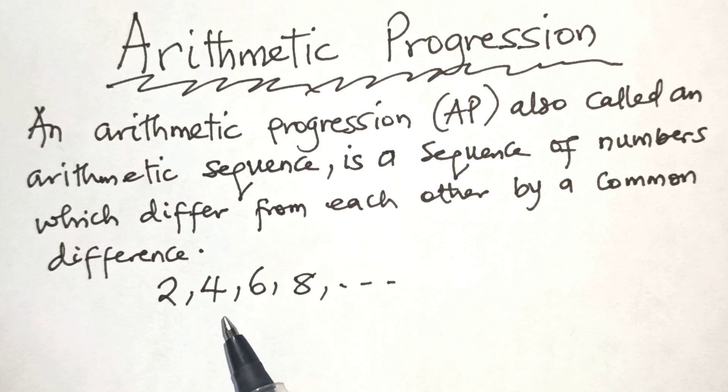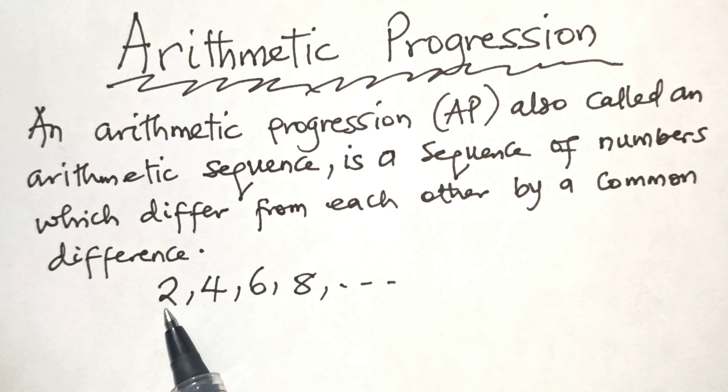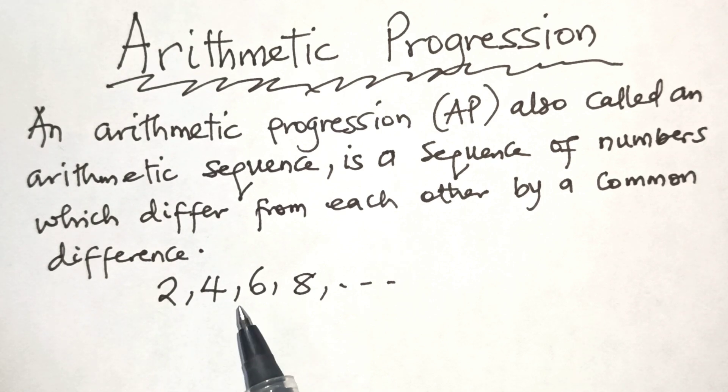It has a common difference of 2. In an arithmetic progression or AP, the first number is called the first term. So in this sequence, the first term is 2, while the common difference is 2.